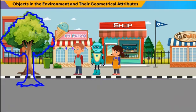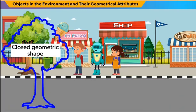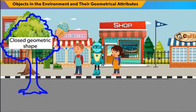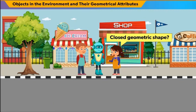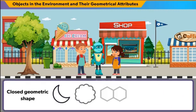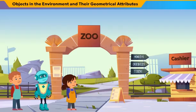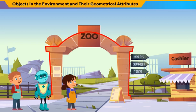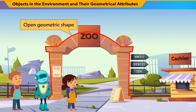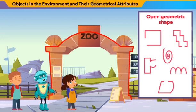Well, this tree over here is a closed geometric shape. Closed geometric shape? In geometry, when an object or a shape is connected with both ends, it is considered a closed geometric shape. What about this arch? This is an open geometric shape — when an object or shape is not connected at both ends, it is an open geometric shape.